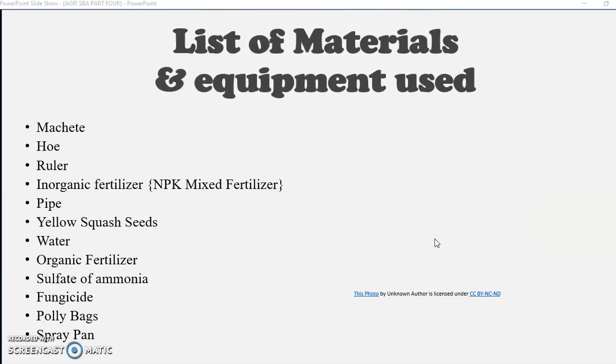Moving to our materials and equipment, it says list off, so you're going to be listing them one, two, three, all the materials and equipment that you will need, not that you used, but all that you will need because you might already have some and will not have to purchase them, but all that are required to grow the crop, list them here.